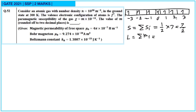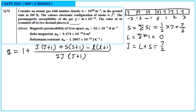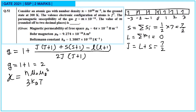Since L = 0, J = L + S = 7/2. The Landé g-factor is g = 1 + [J(J+1) + S(S+1) − L(L+1)] / [2J(J+1)]. With L = 0, this simplifies to g = 2. The paramagnetic susceptibility formula is χ = nμ₀μ_B² g² J(J+1) / (3k_B T).